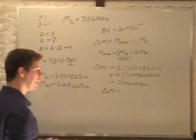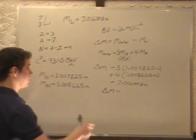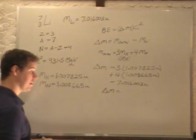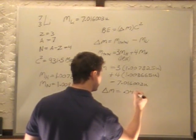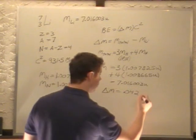So, our mass defect, or delta M, after we multiply those two, do that, is 0.042132U.